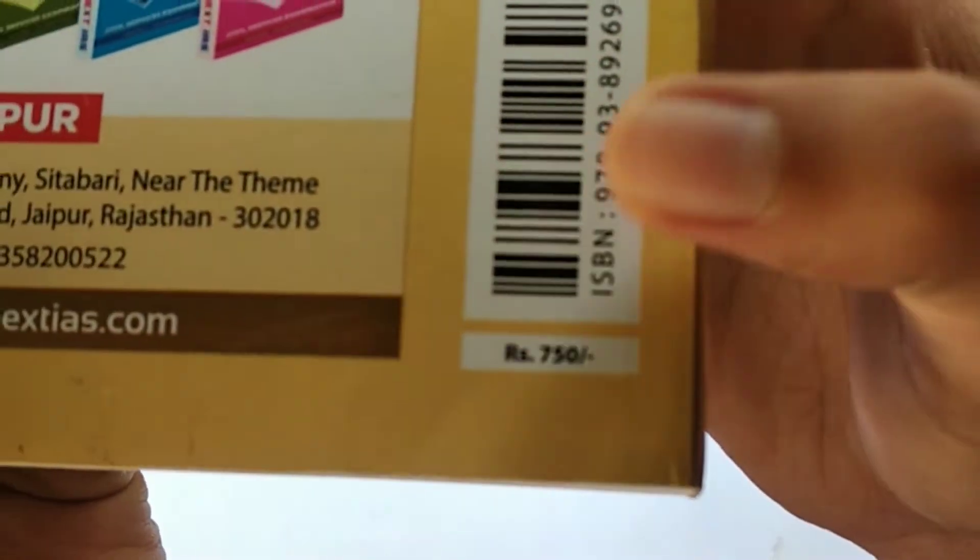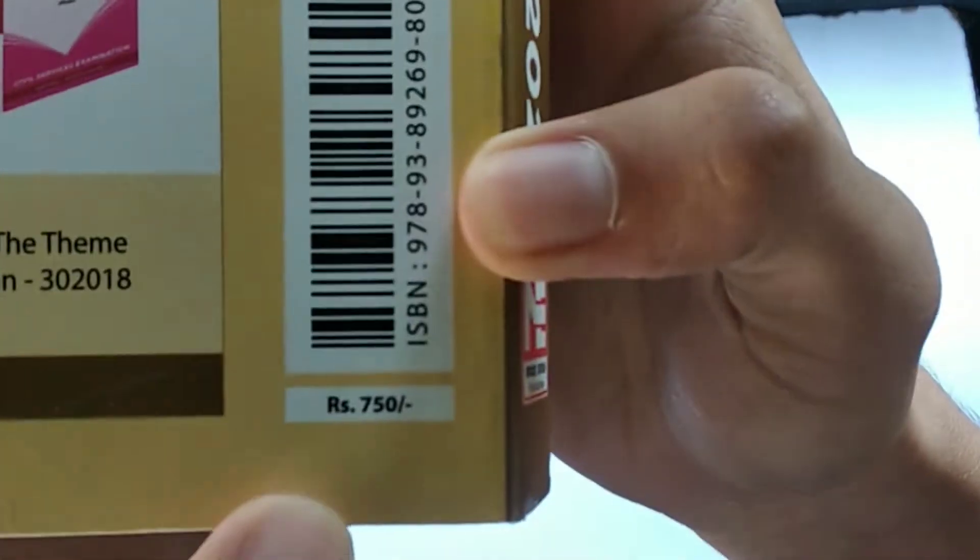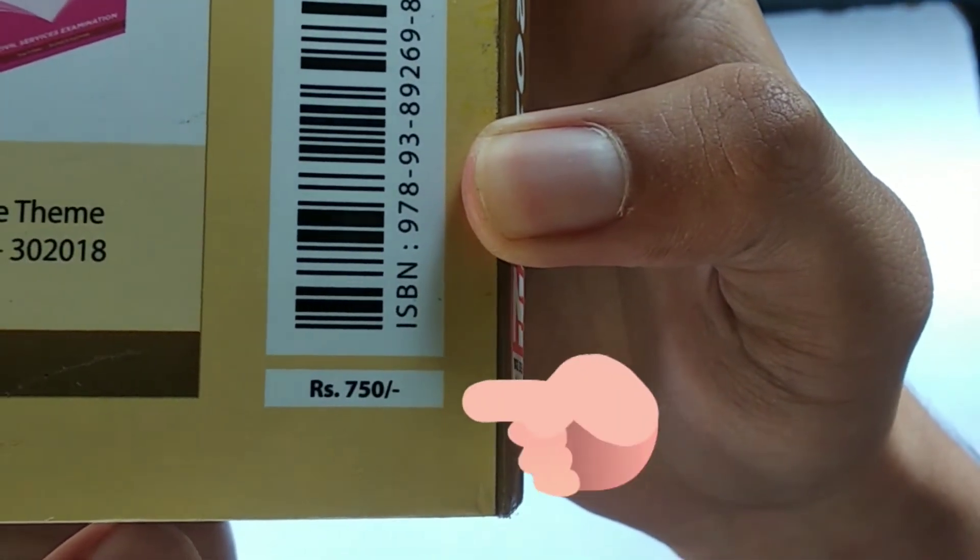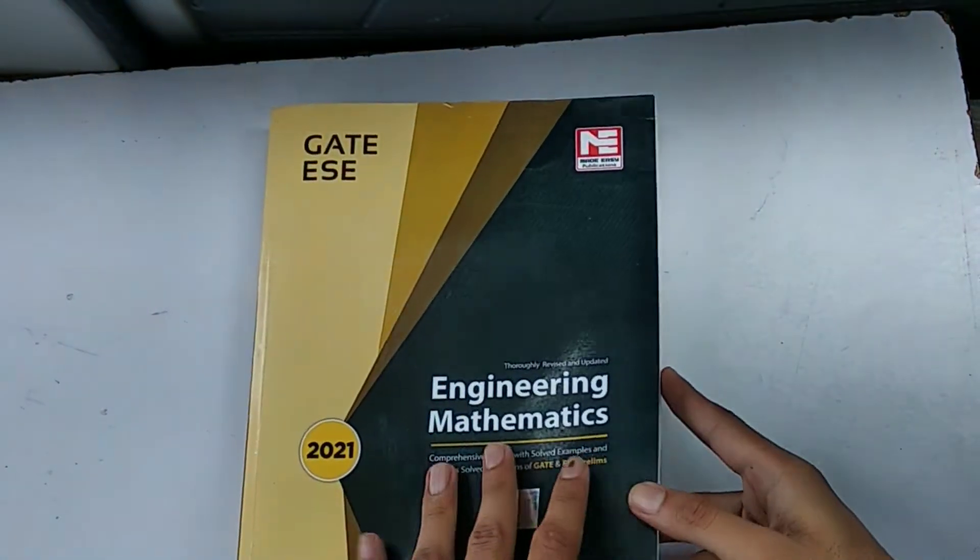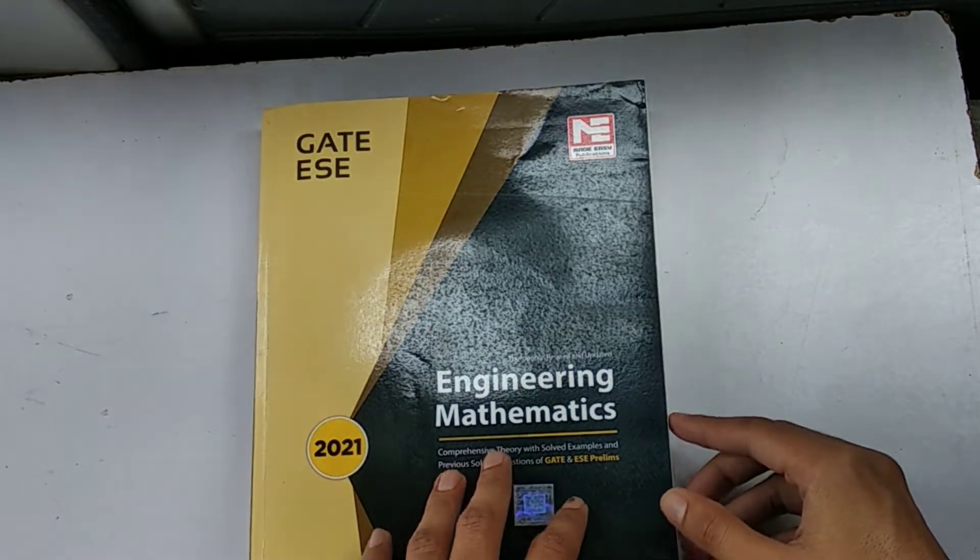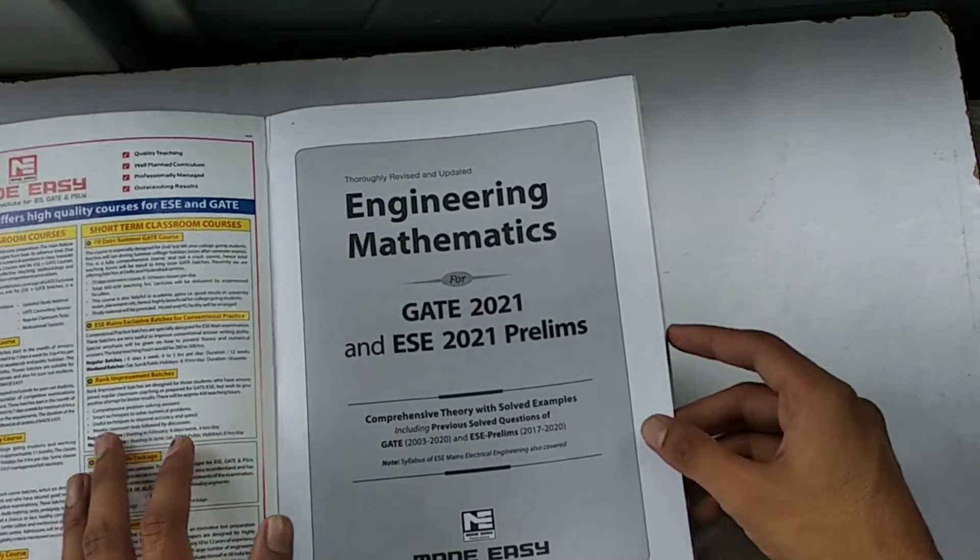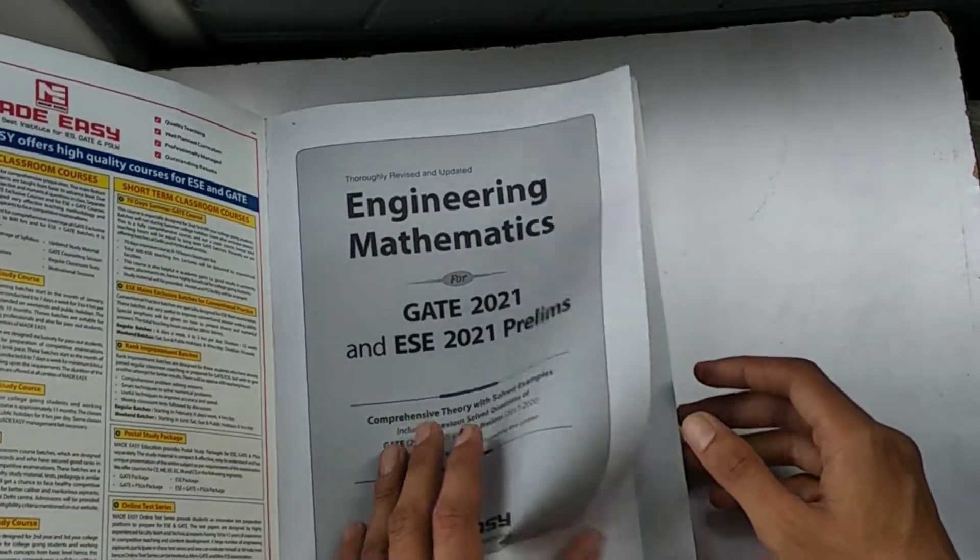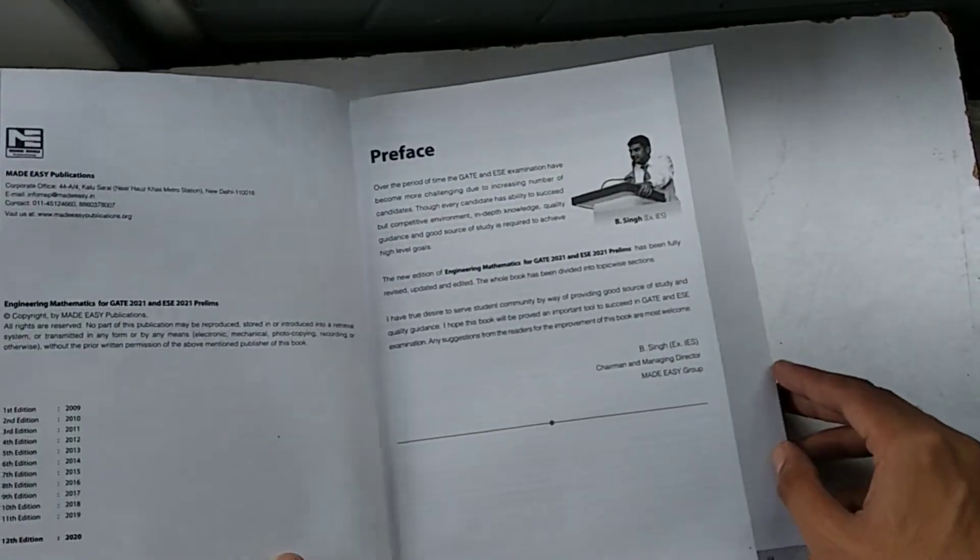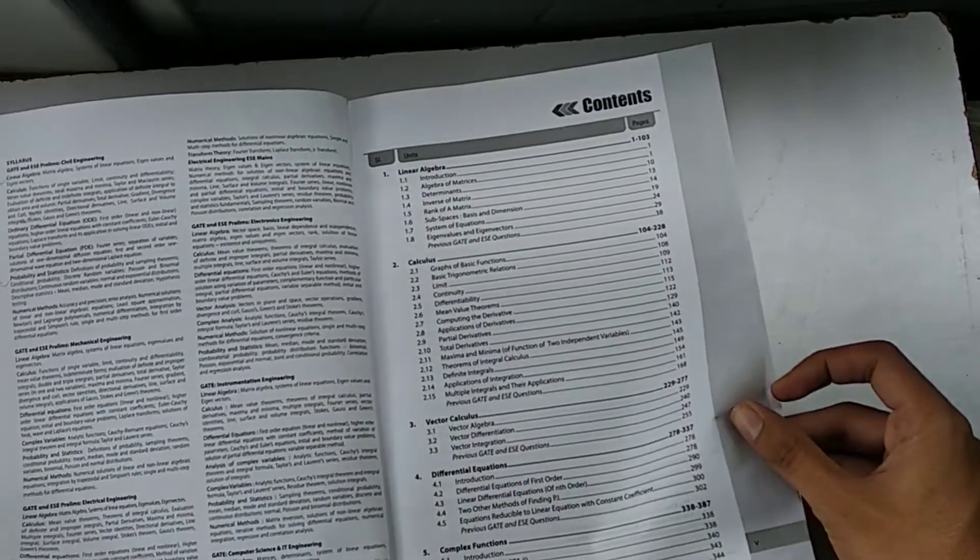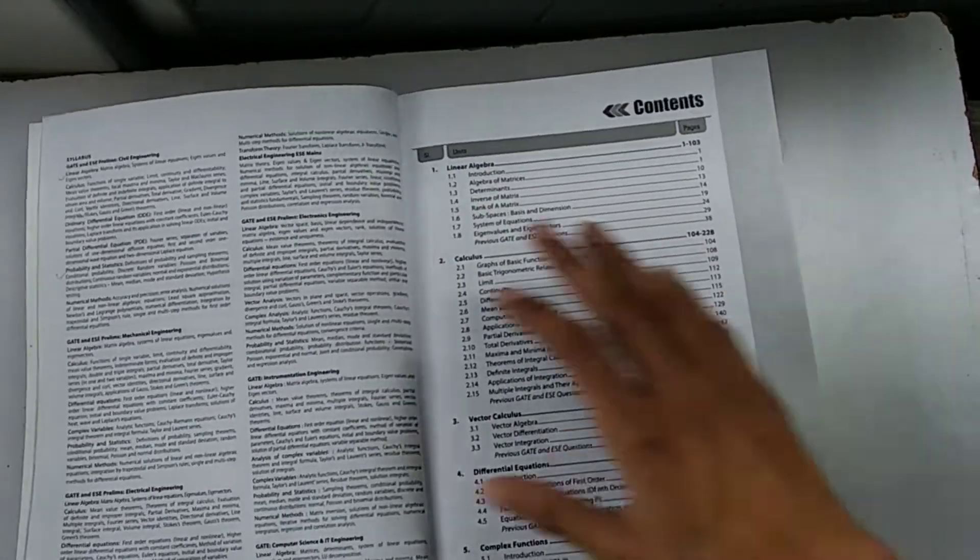Let me talk about the price of this book before opening. It's 750 printed right here, I hope you can see that. And on sale on Amazon currently, I think it's available for around 450. Rates are subject to change. So I have opened it up and here it is - it has a preface.